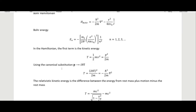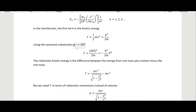We then do the canonical substitution, so the momentum operator is i h-bar times the del operator. Our kinetic energy then becomes T equals (i h-bar del)² over 2m, which gives us minus h-bar squared over 2m times the del squared operator, since i squared equals minus one. The relativistic kinetic energy is the difference between the energy of the rest mass in motion minus the rest mass.